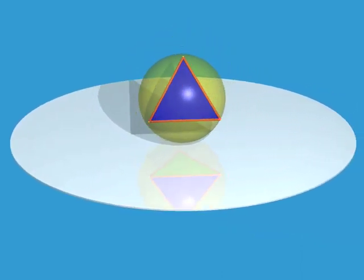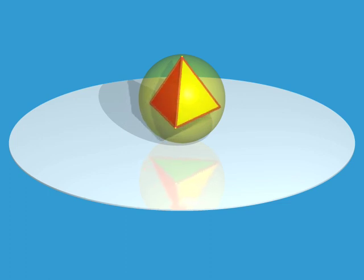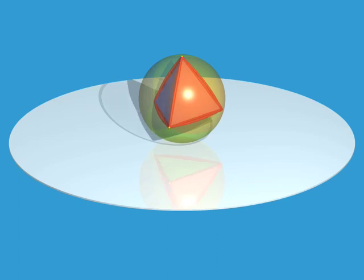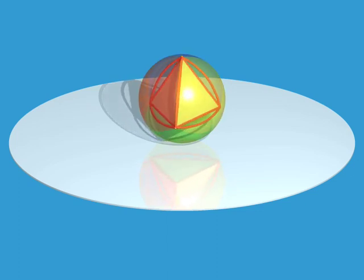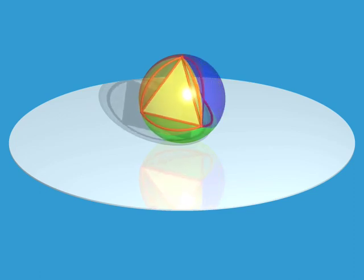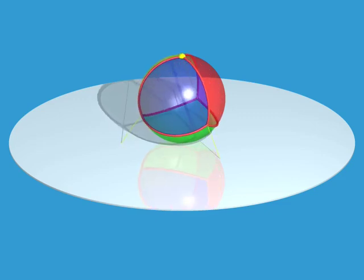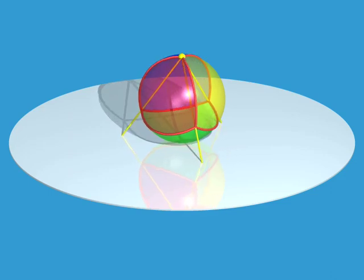To get a better understanding of four-dimensional polyhedra, we can do just what the lizards did with the three-dimensional polyhedra. We first inflate them so that they lie on a sphere, and then project this stereographically onto the plane. This time, we'll inflate the polyhedron until its faces lie on a hypersphere in four-space, and project stereographically back into our own three-space.